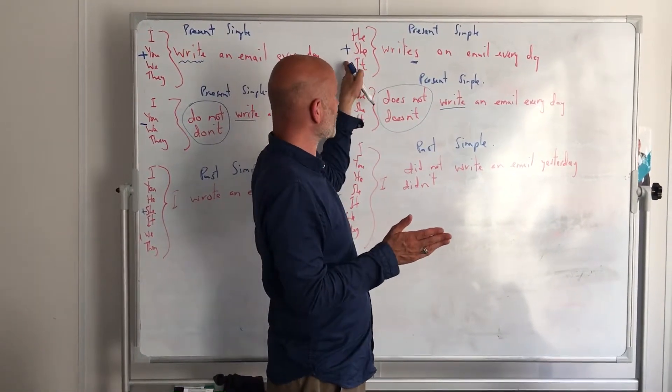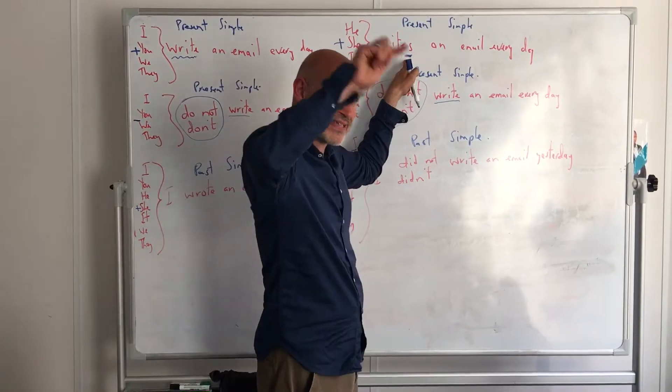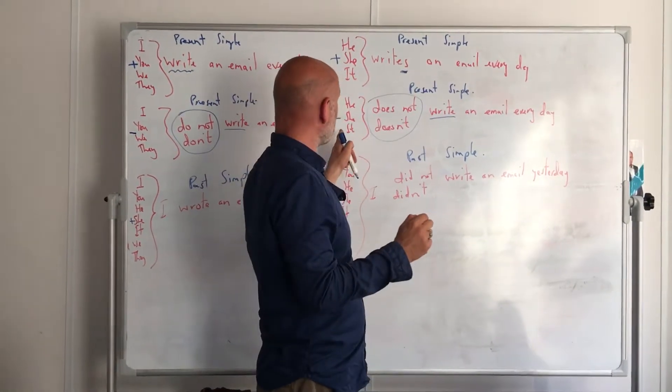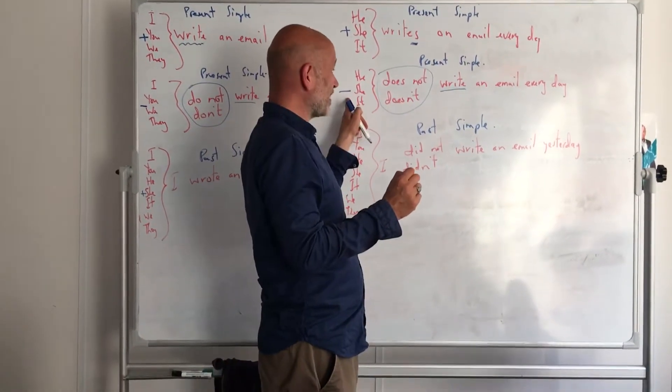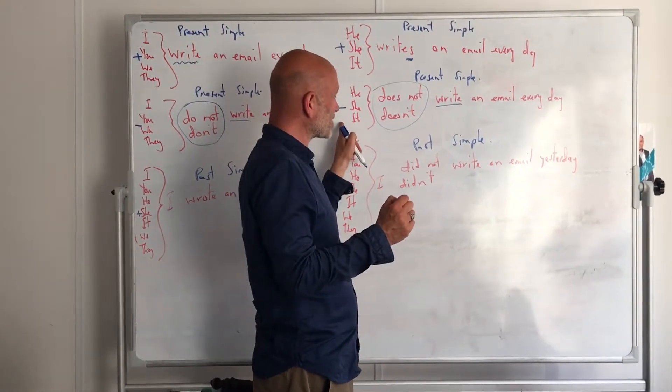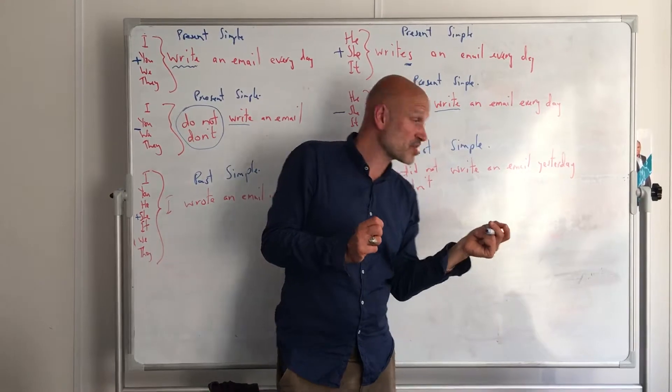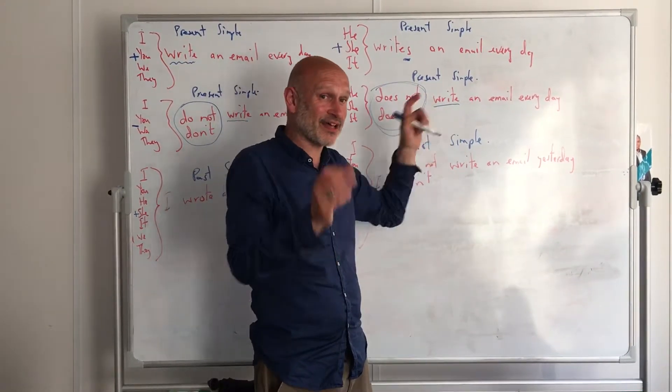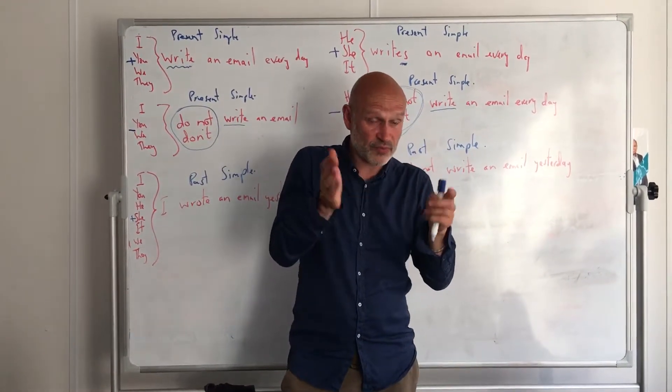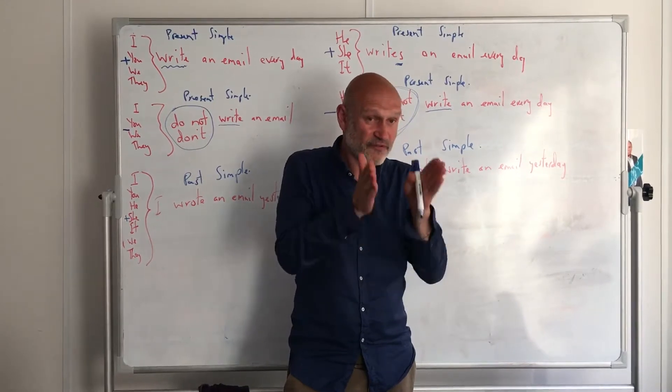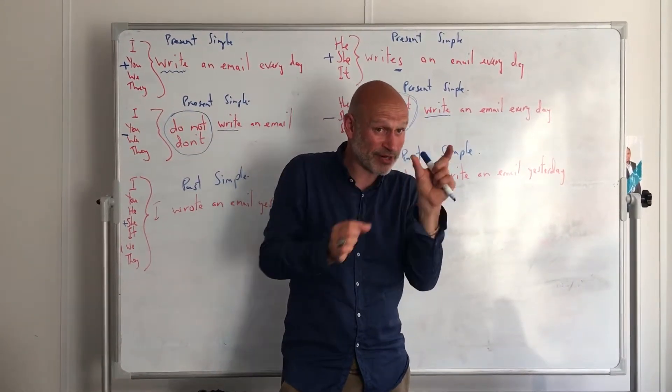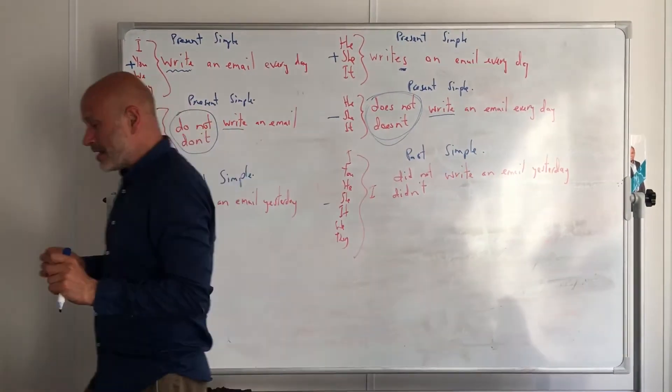So we have to be careful. In the present simple positive we use the S, but in the negative we use this word 'does not' and the main verb has to stay the same as if it was infinitive first person. So we need to remember a couple of things.